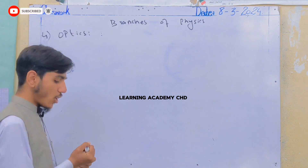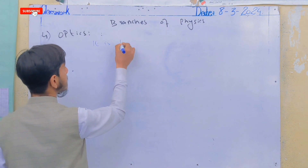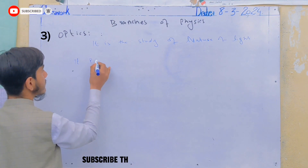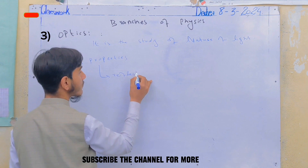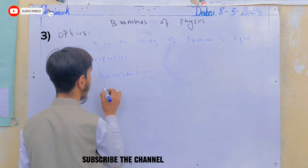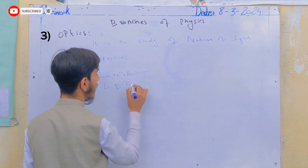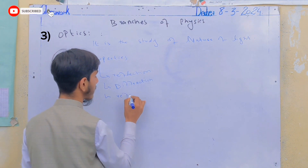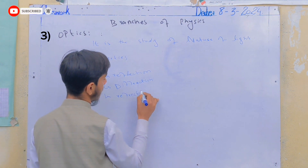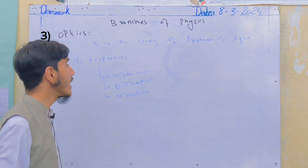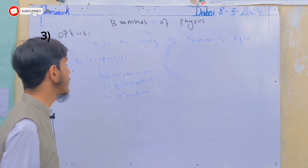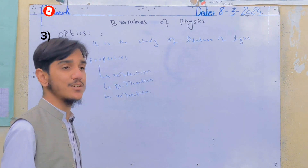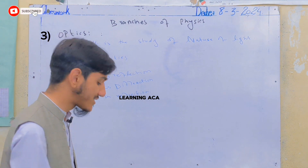The third branch is optics. Optics is related to light — it is the study of the nature of light and its properties. These properties include reflection, diffraction, and refraction. Each of these will be covered in detail one by one.